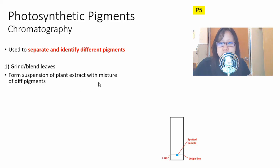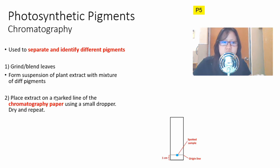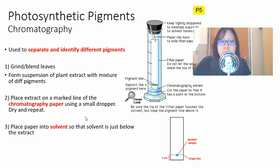We take that extract, we put it on a marked line of chromatography paper using a small dropper right here. We make it dry so the water evaporates and the pigments get more concentrated and we repeat this a few more times so that we get enough pigment at the origin line. Then we will take it and we will place the paper into a solvent.